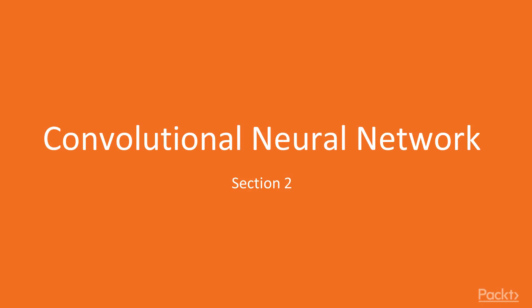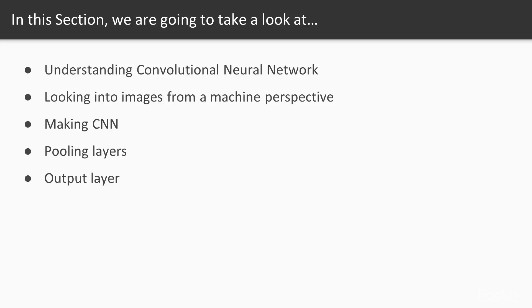Welcome to Section 2 of Deep Learning with PyTorch. Section 2 will cover Convolutional Neural Networks. In this particular section, we will understand what is a Convolutional Neural Network, how computers understand images, and we will create a model to process the images.